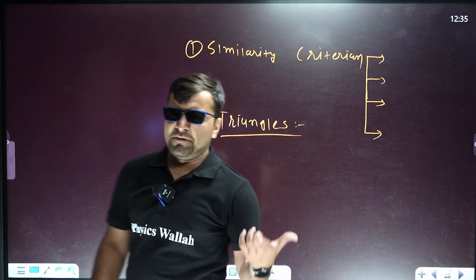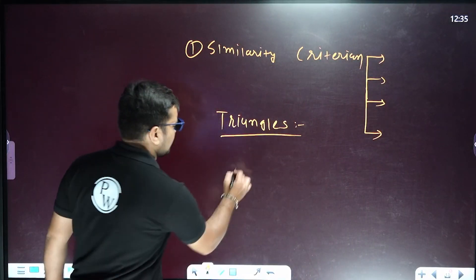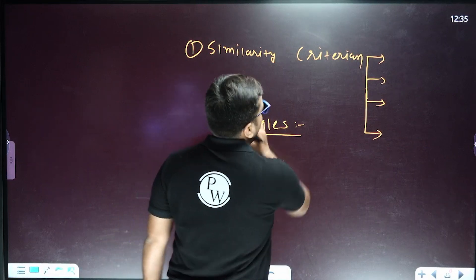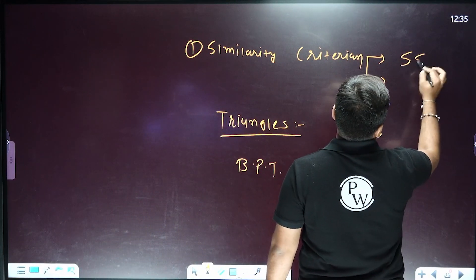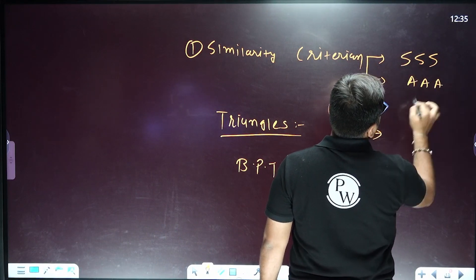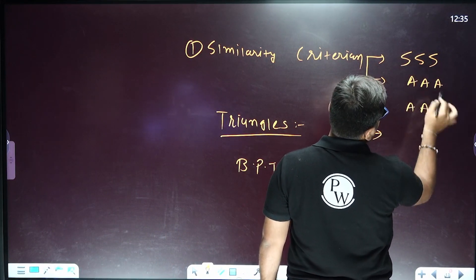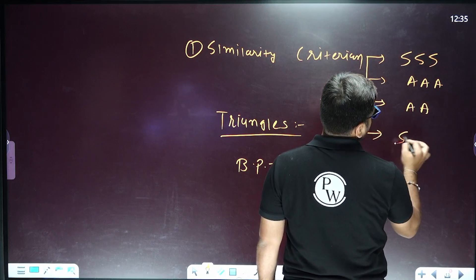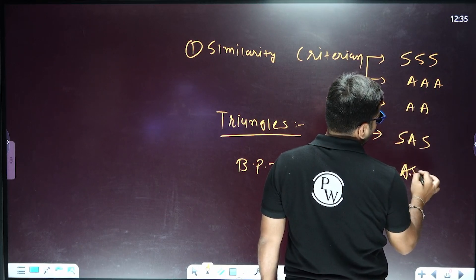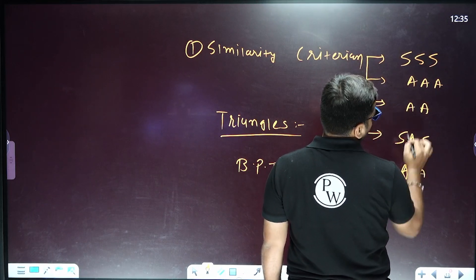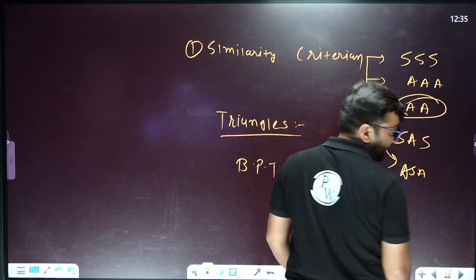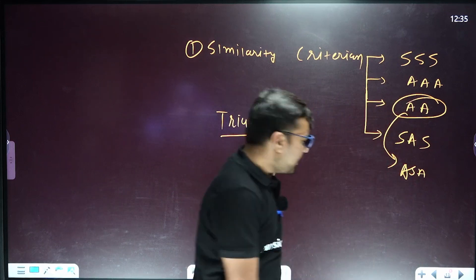Next, triangles. Important theorems include the Basic Proportionality Theorem (BPT). Similarity criteria include Side-Side-Side (SSS), Angle-Angle-Angle (AAA), and Side-Angle-Side (SAS). Angle-Side-Angle is part of Angle-Angle, so it need not be considered separately.